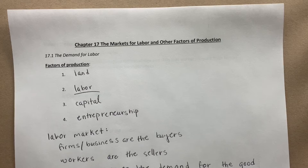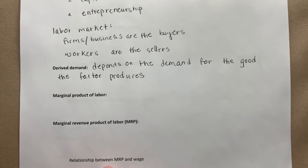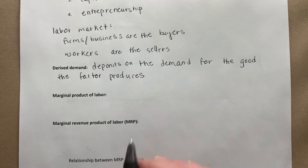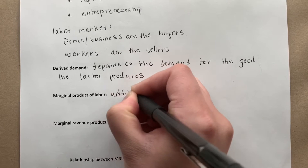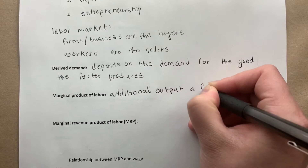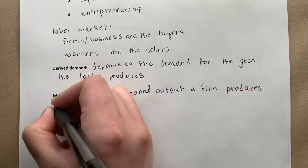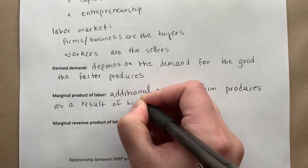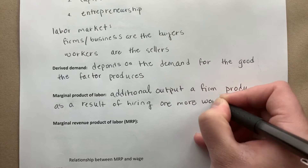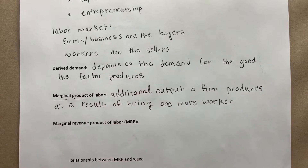Assuming Apple is a price taker, they're going to want to consider how much each worker is costing them relative to how much each worker is producing. The idea we have here is the marginal product of labor — that is the additional output a firm produces as a result of hiring one more worker. Marginal is that extra amount, and the product is the output of labor.